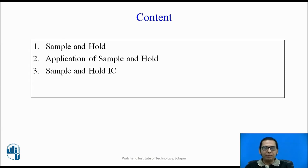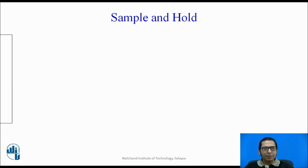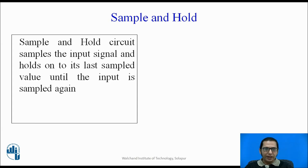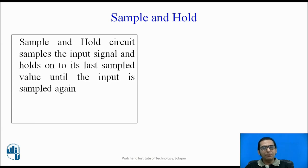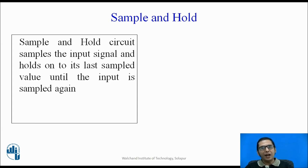To begin with, what is a sample and hold? A sample and hold is a circuit which samples the input signal and holds on its last sample value until the input is sampled again. The input is a continuous signal and you take samples of it. When you take a sample, a particular value is captured and held at the output until the input is sampled again. During the hold period, the input may change, but the output is not going to change.